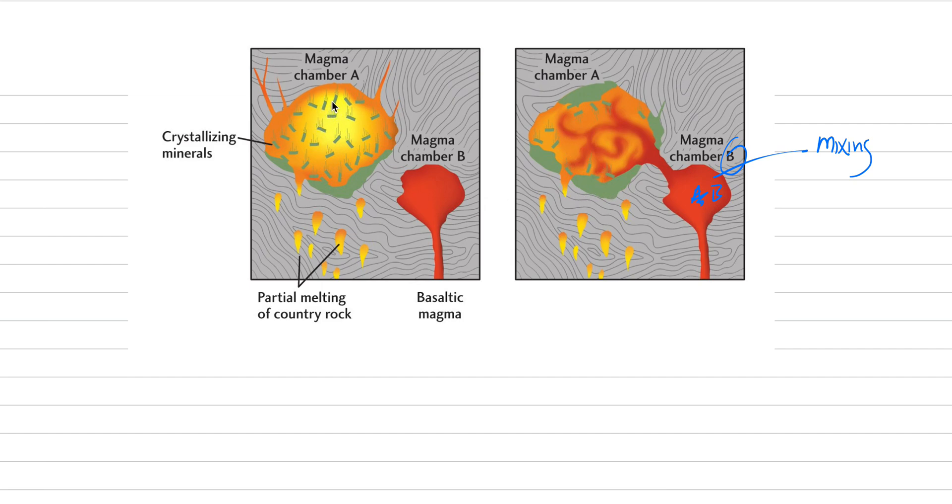We can also change the composition of magma by fractional crystallization, where crystals form from the magma, they nucleate and grow, and then they sink down to the base of the chamber, changing the resulting composition. You can also partially melt the country rock and change magma chamber that way. So we're going to get into fractional crystallization, partial melting, and magma mixing.